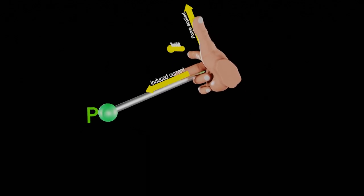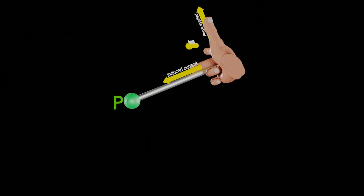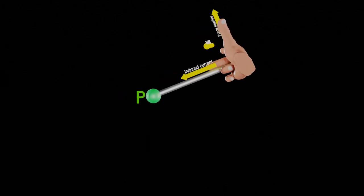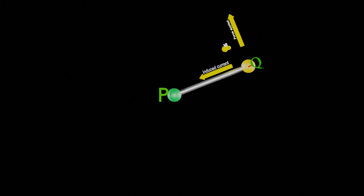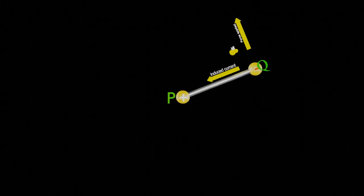As there is an EMF induced in a conductor, therefore, it will act like a battery. And we know, inside a battery, direction of current is from negative to positive, since Q end will become negative and P end will become positive. And we got polarity of EMF induced very easily.